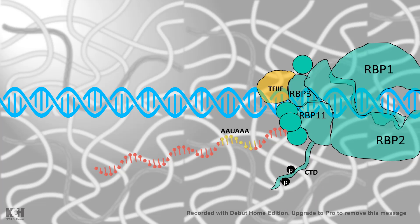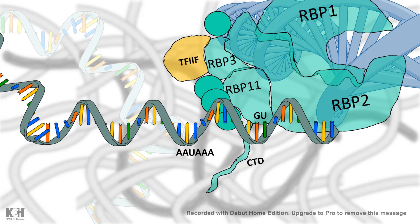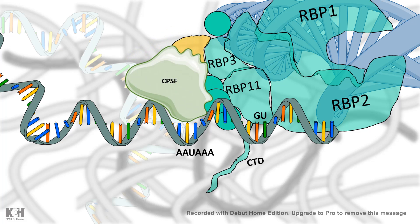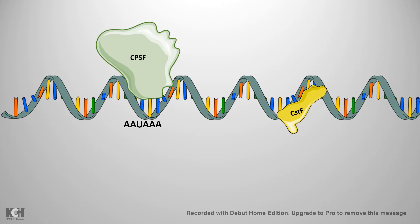There is a sequence which is AAUAAA. At this sequence, specific proteins such as CPSF — Cleavage and Polyadenylation Specificity Factor — bind. There is also another sequence a little bit downstream, a GU-rich sequence, where CstF — Cleavage Stimulation Factor — binds. All these enzymes that bind to these specific regions have their particular significance in terms of polyadenylation.